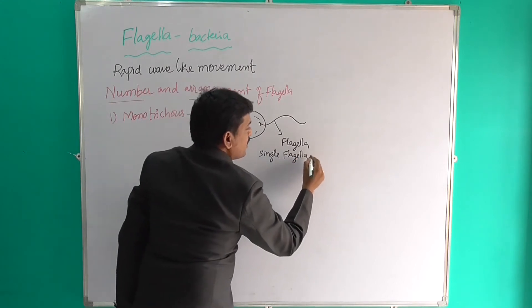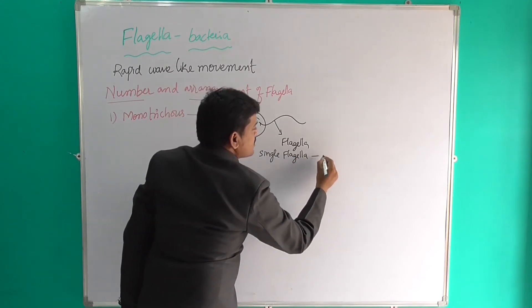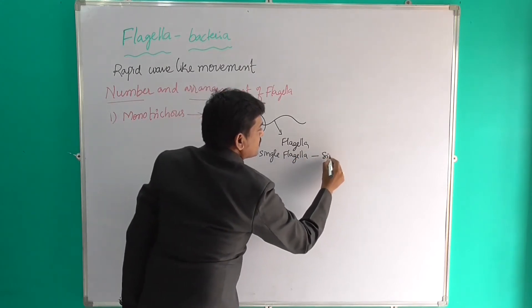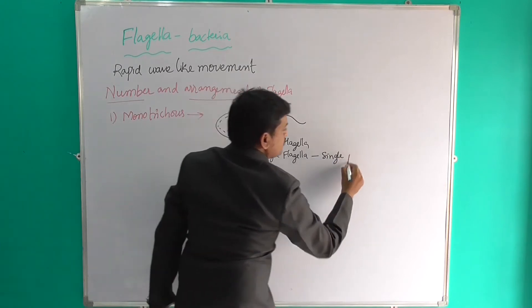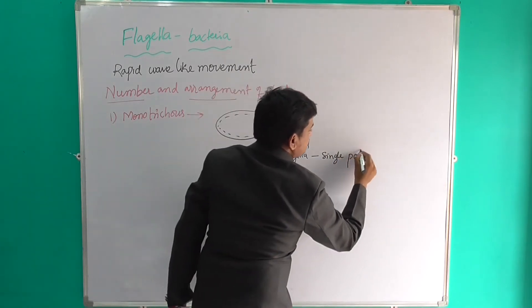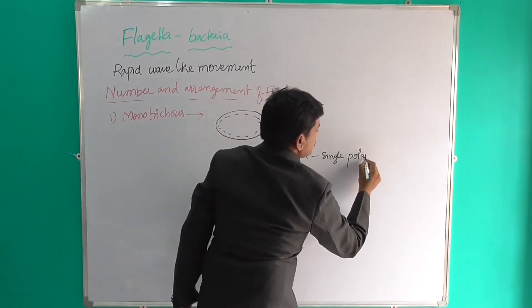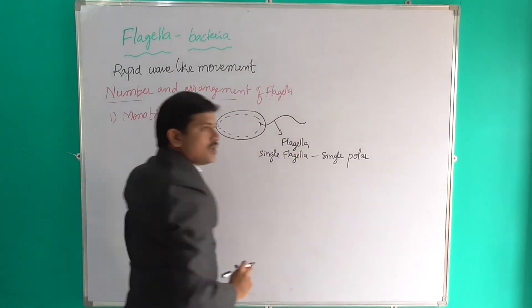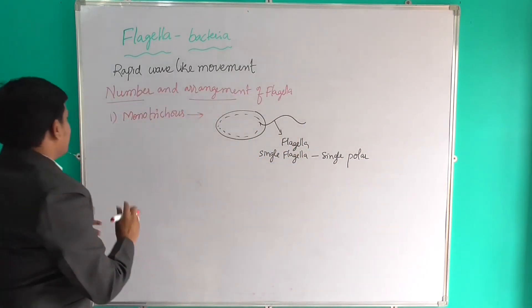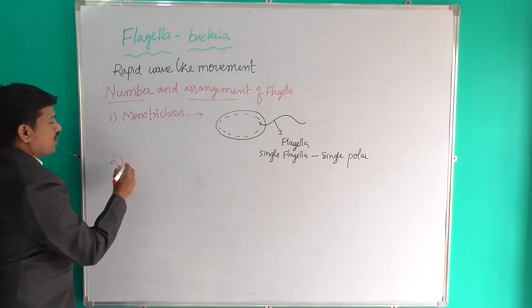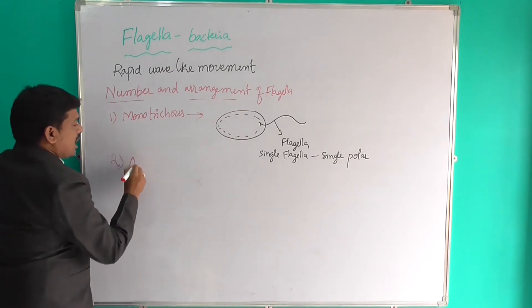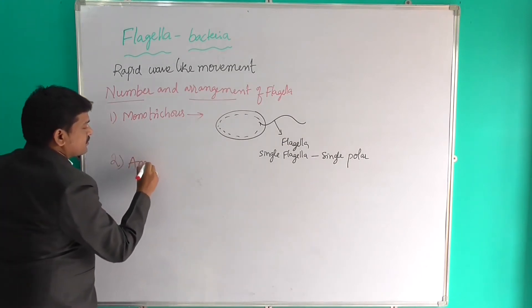So single flagella which are present in a single polar side — that is monotrichous. The second one is amphitrichous.